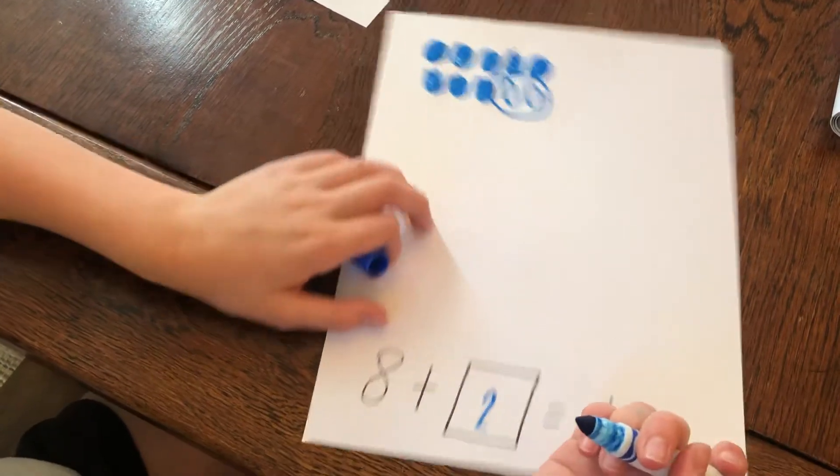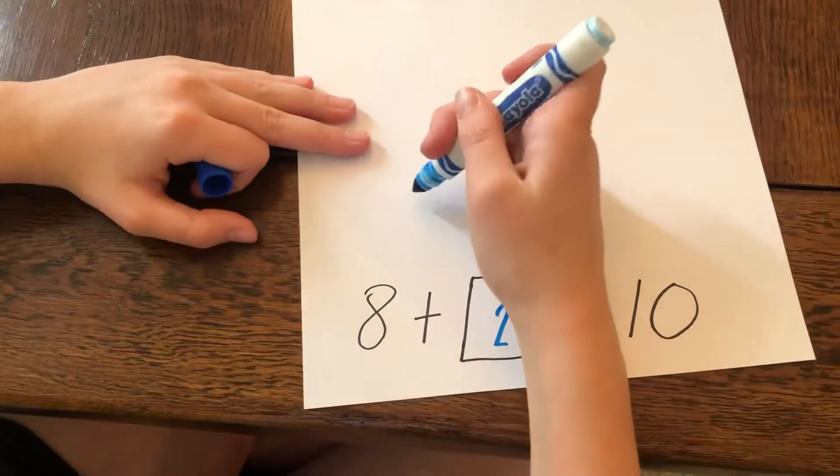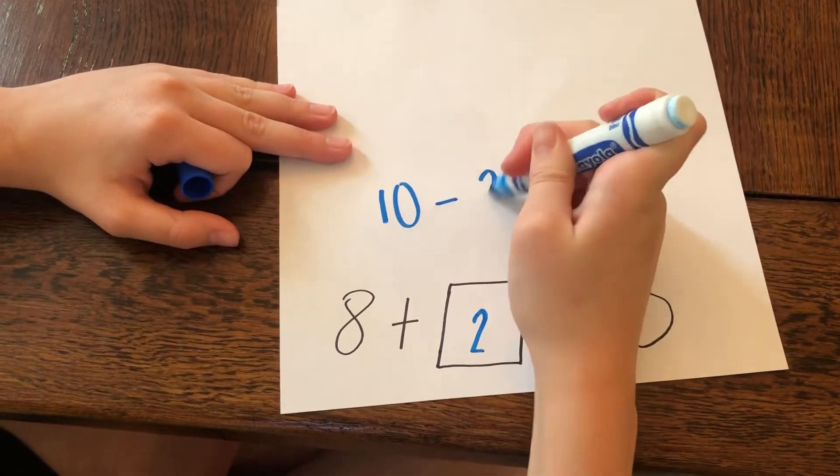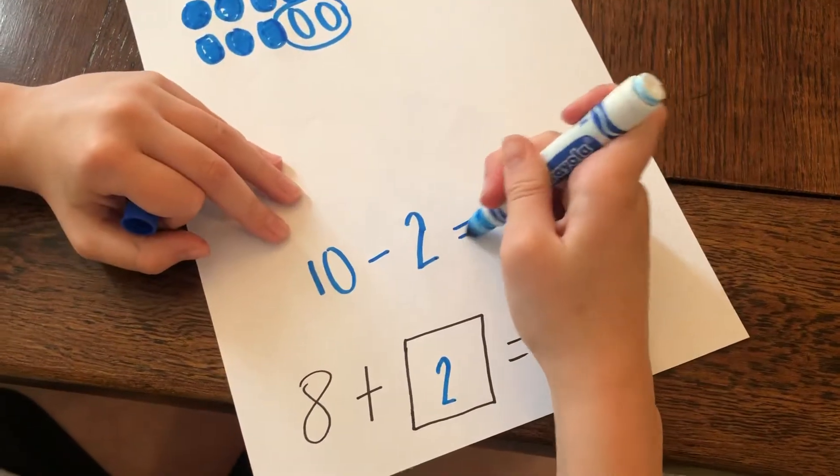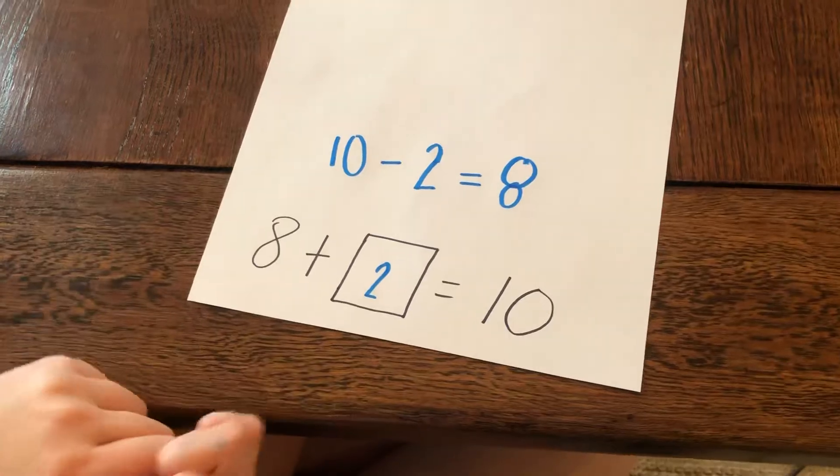You know another way you could do this? Well, we could do this like the double switcheroo. We could say 10 minus 2 equals 8 because I know that